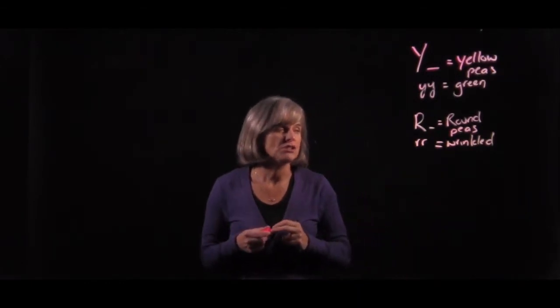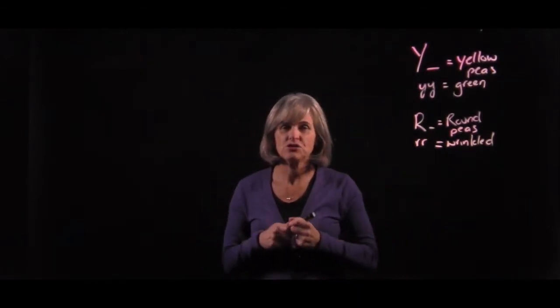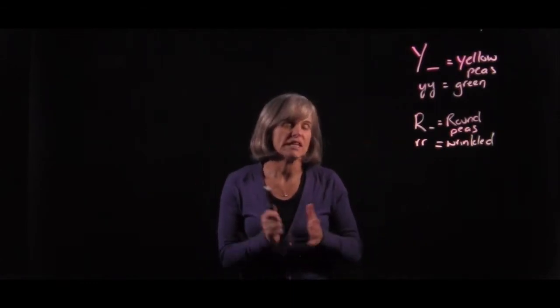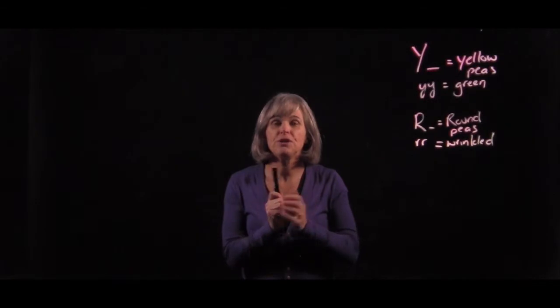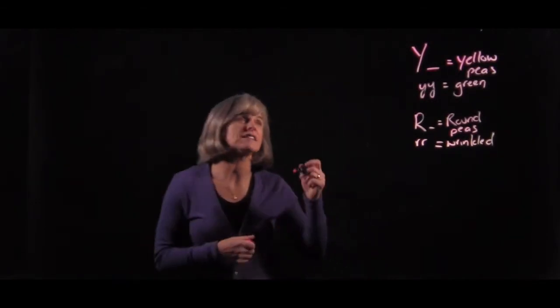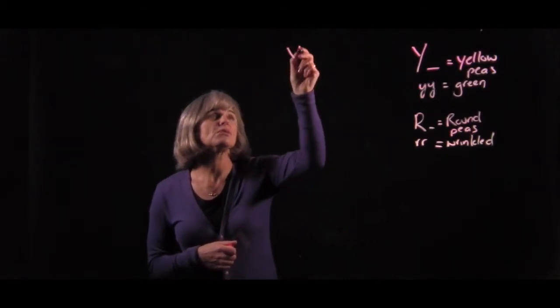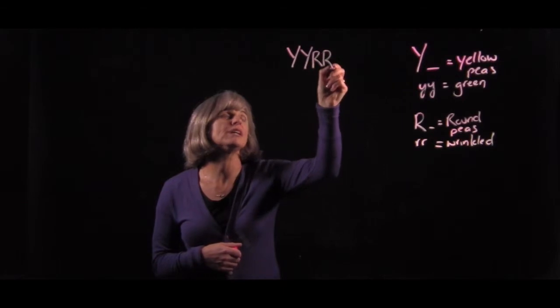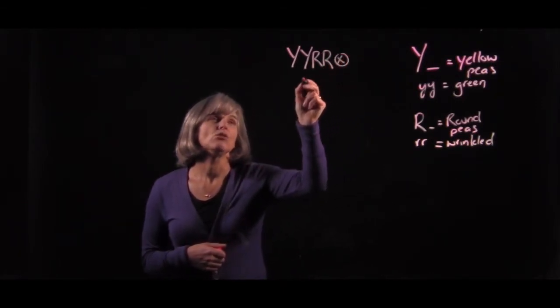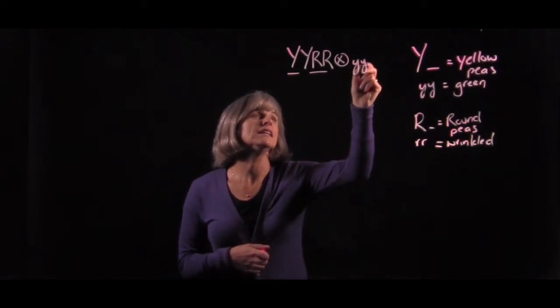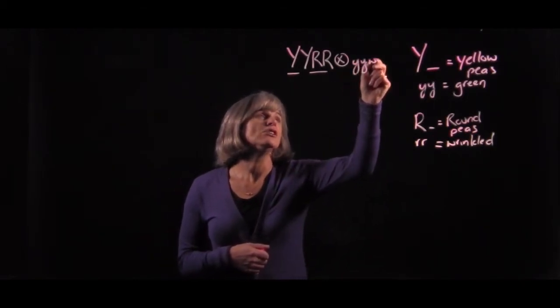So I want you to imagine that we are asked to cross, to do a cross using branch diagram, and we're asked for phenotypic ratios. So you may recall that Mendel started with a couple of pure-breeding lines. He started with some pure-breeding yellow round peas and crossed those with some pure-breeding green wrinkled peas.